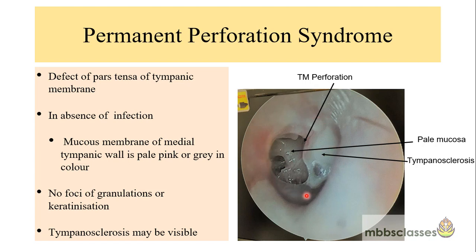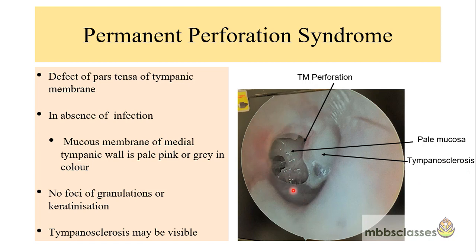As we can see here, this is the otoscopic image of a patient with chronic otitis media. The ear is completely dry. We can see the tympanic membrane with a posterior perforation; the malleus handle is not seen. This is the incudostapedial joint and this is the round window. The middle ear mucosa appears gray in color, indicating no edema or active infection. We can also see another pathological finding — tympanosclerosis — appearing as a chalky white deposit on the remnant tympanic membrane. In cases of permanent perforation syndrome, there will not be any granulation tissues or keratinization.